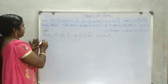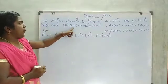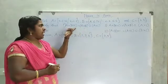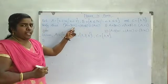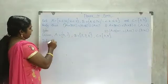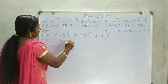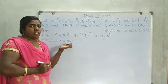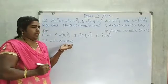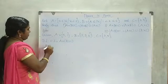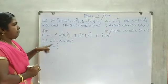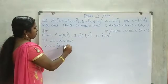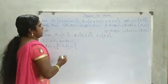Let's do the first question. We need to verify: A cross (B union C) equals (A cross B) union (A cross C). First we find the LHS, which is A cross (B union C). B union C is in the bracket, so we first find B union C. B is {2, 3, 4} and C is {3, 5}.